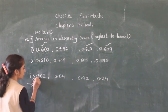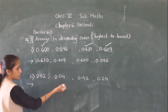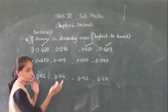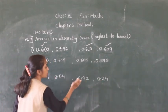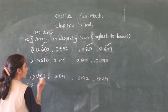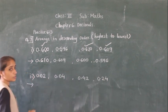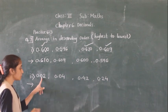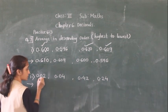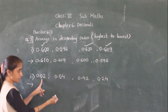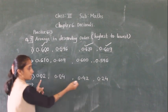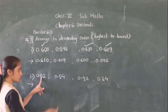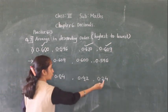Compare the whole number part: 0, 0, 0, 0 — all the same. Check the tenths place after the decimal point. At the tenths place here it is 0, here it is 0, here it is 0, here it is 4, and here it is 2.